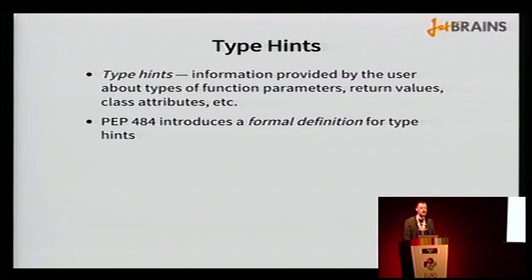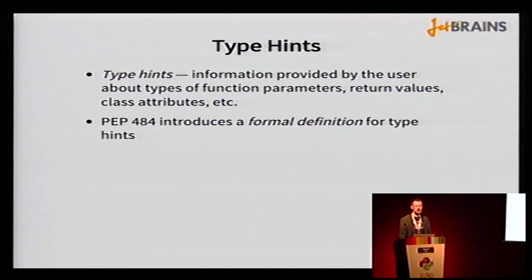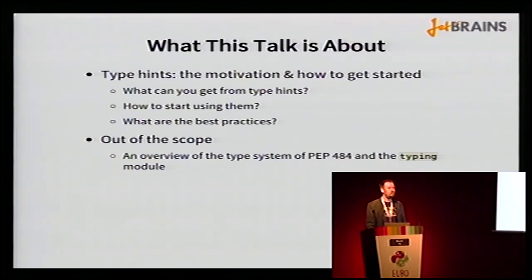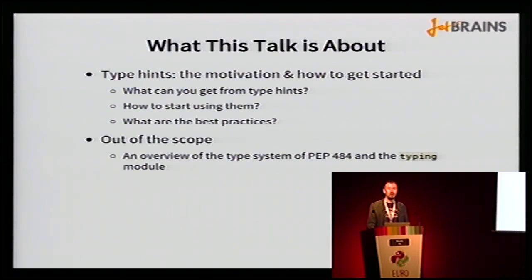What are type hints? Type hints are information provided by the user about the types in their programs — like types of function parameters, types of class attributes, and so on. PEP 484 defines the formal notation for type hints. What I'm going to talk about is the motivation behind type hints in Python, how to get started with them, and best practices for annotating your code.